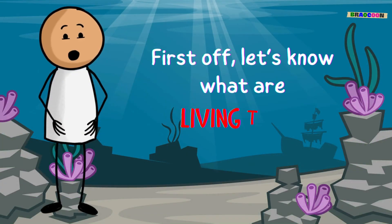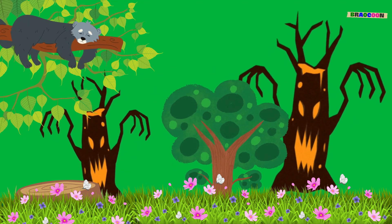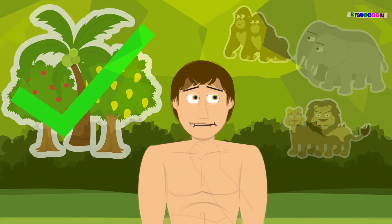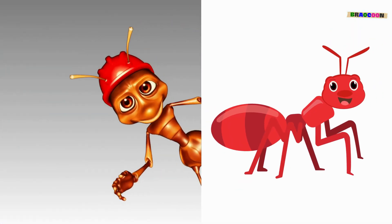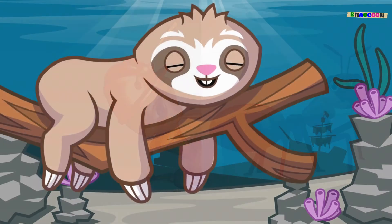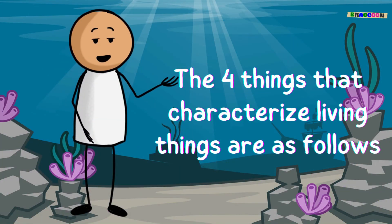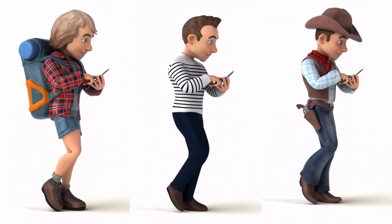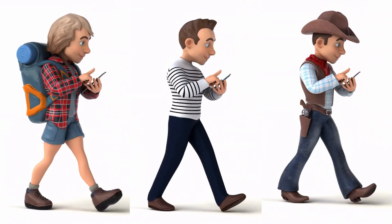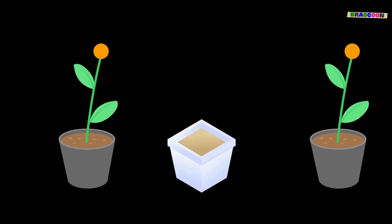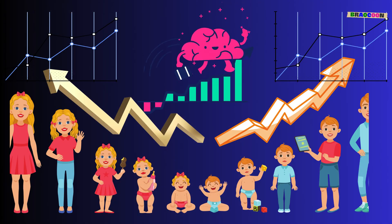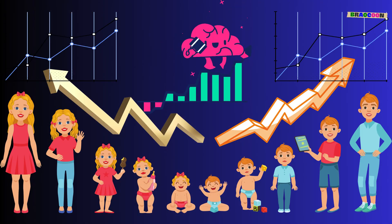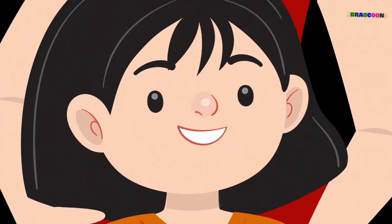First off, let's know what are living things. Living things are all around us. They can be as big as a gigantic whale in the ocean, or as small as a tiny ant in your backyard. But what makes something a living thing? The four things that characterize living things are as follows: living things can move, eat, and grow. They can get bigger and change as they grow, and they can make more living things of the same kind through reproduction.